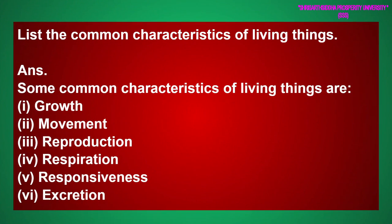List the common characteristics of living things. Answer. Some common characteristics of living things are: growth, movement, reproduction, respiration, responsiveness, and excretion.